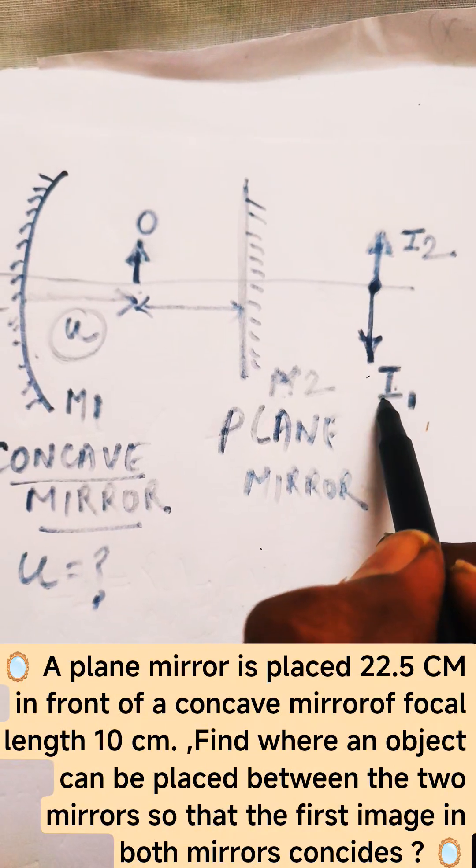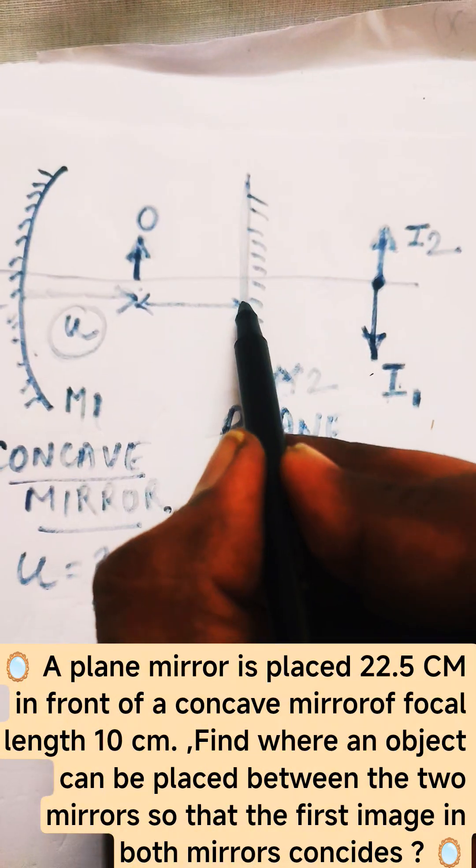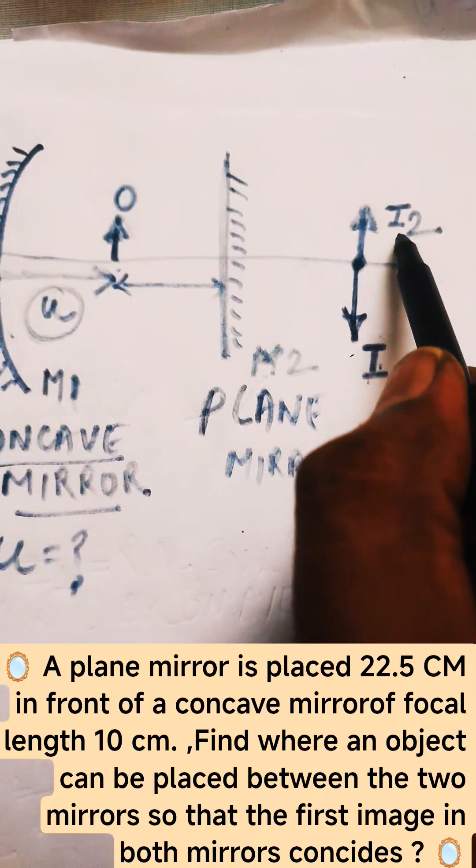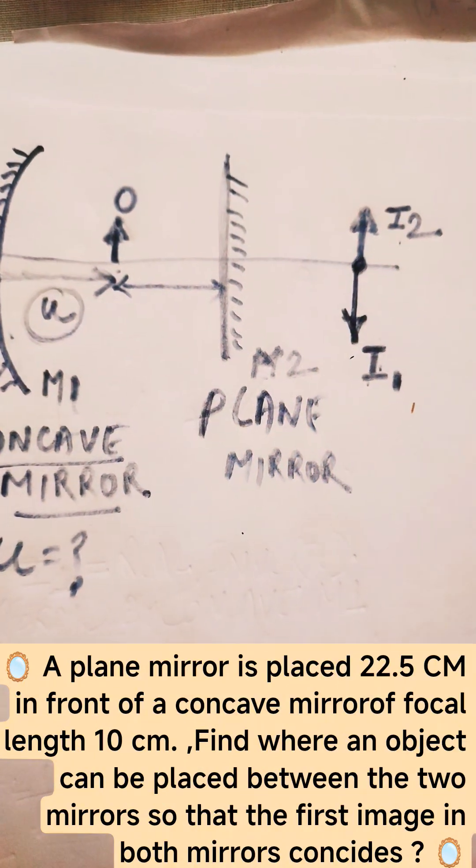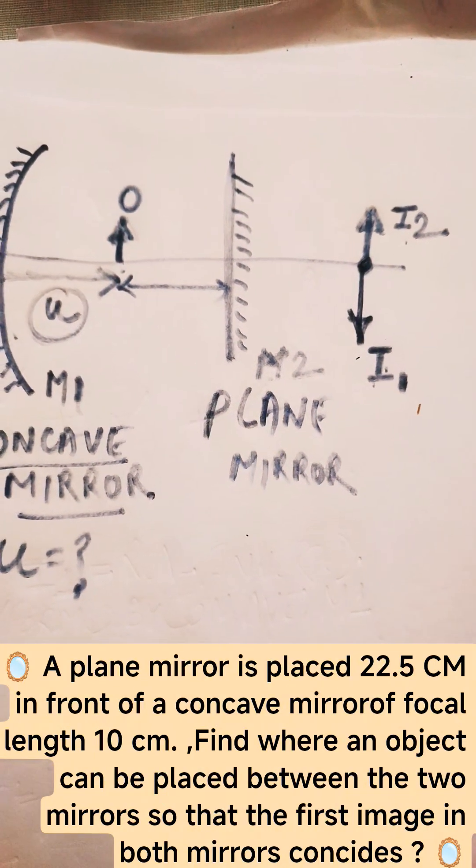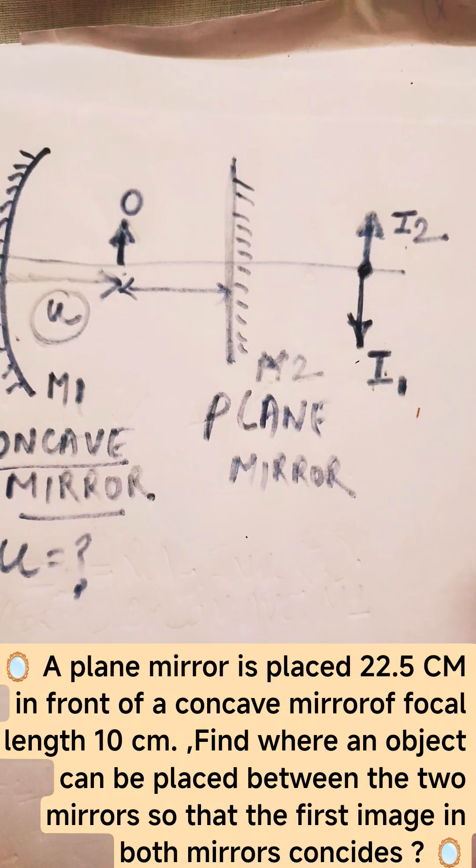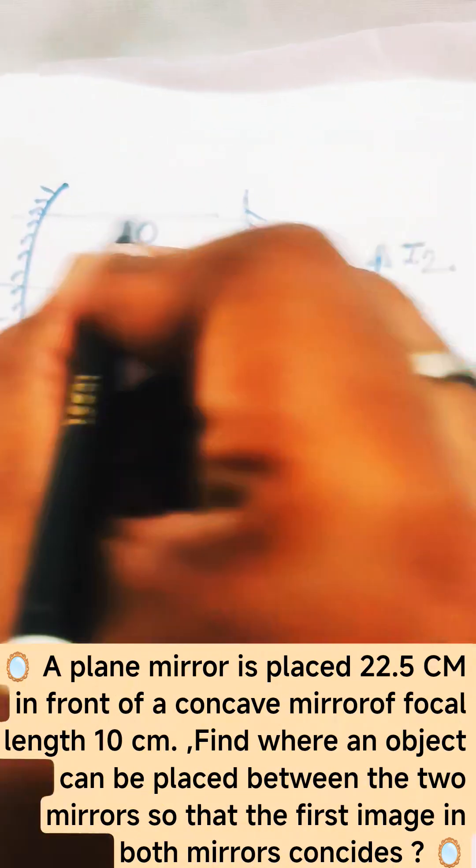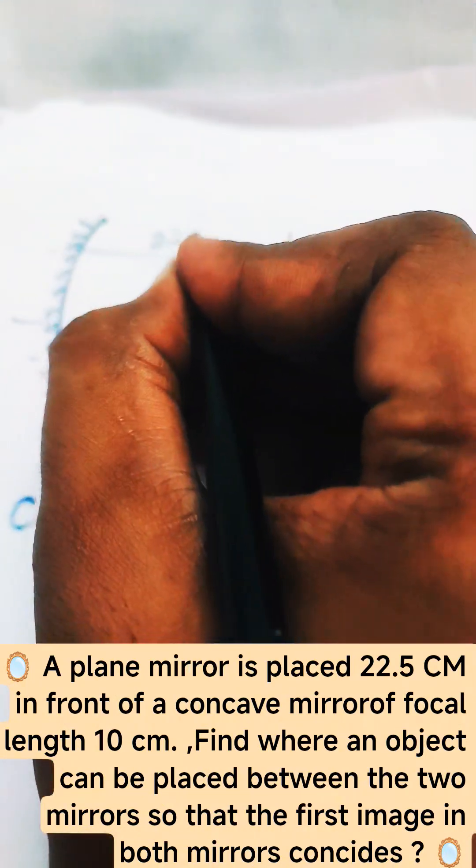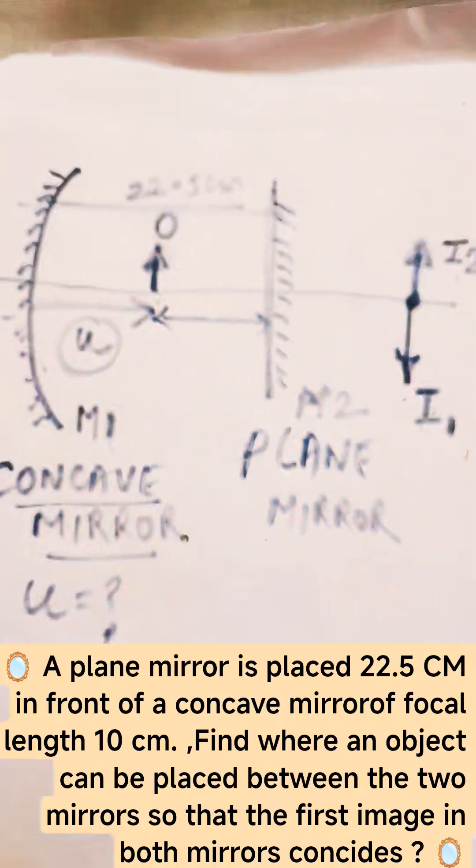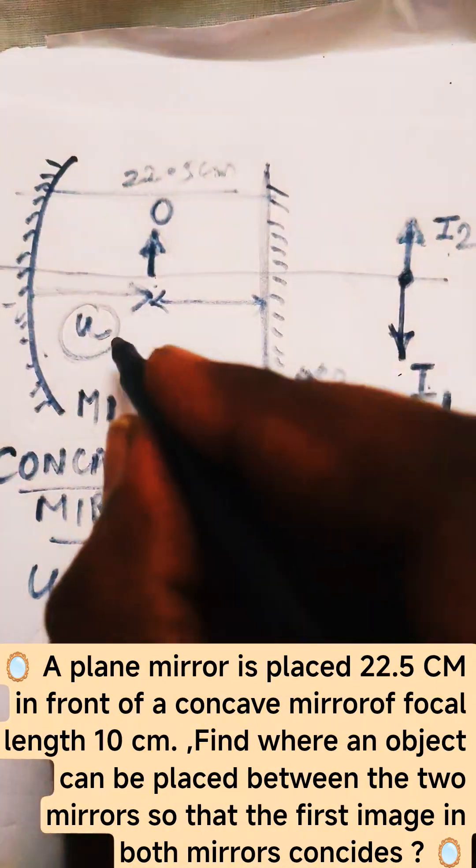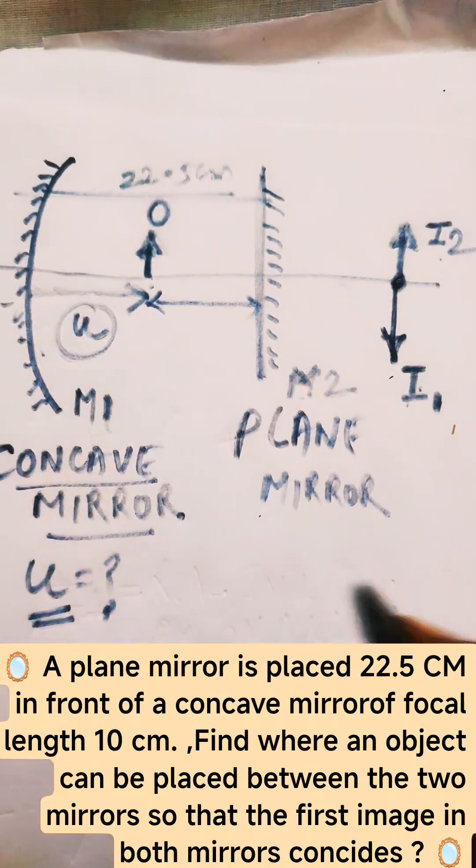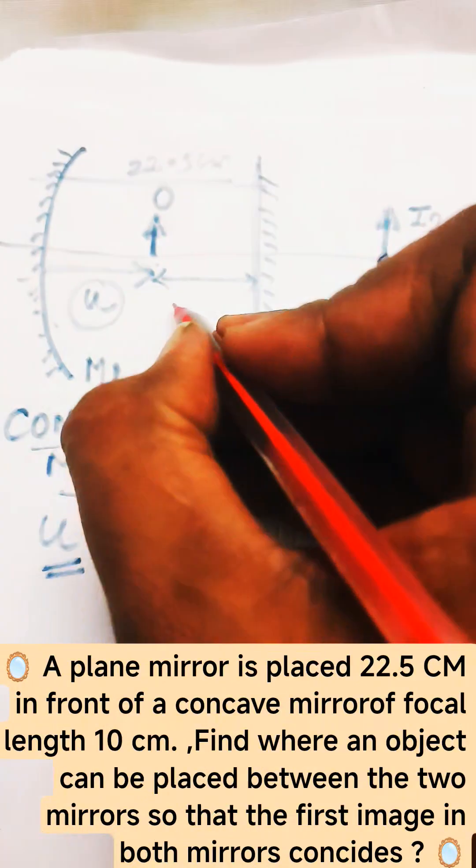that is I1, will coincide with the image formed by this plane mirror which is at I2. You can see these are the same distance, right. And it's given that the distance between two mirrors is 22.5 centimeters. Now just calculate u. This is 22.5, this